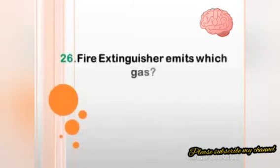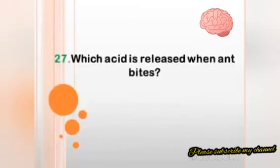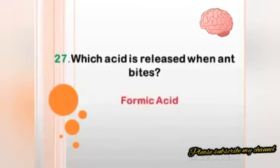A fire extinguisher emits which gas? Answer: carbon dioxide. Which acid is released when an ant bites? Answer: formic acid.